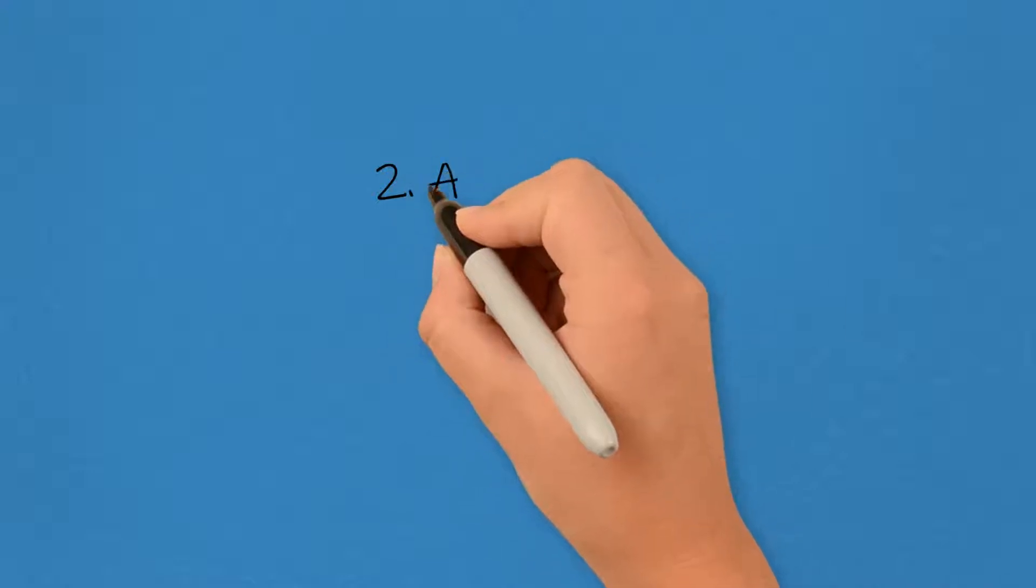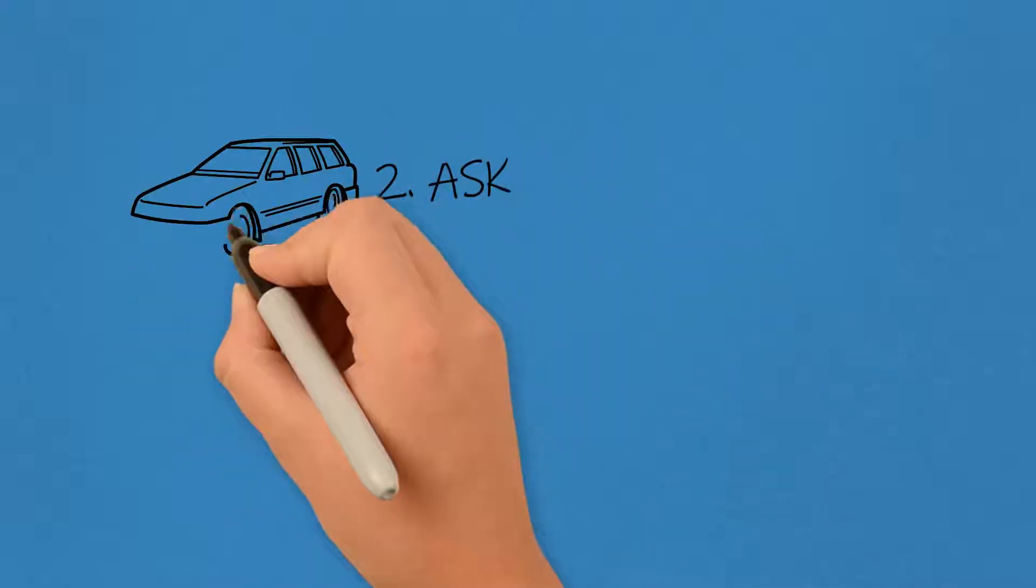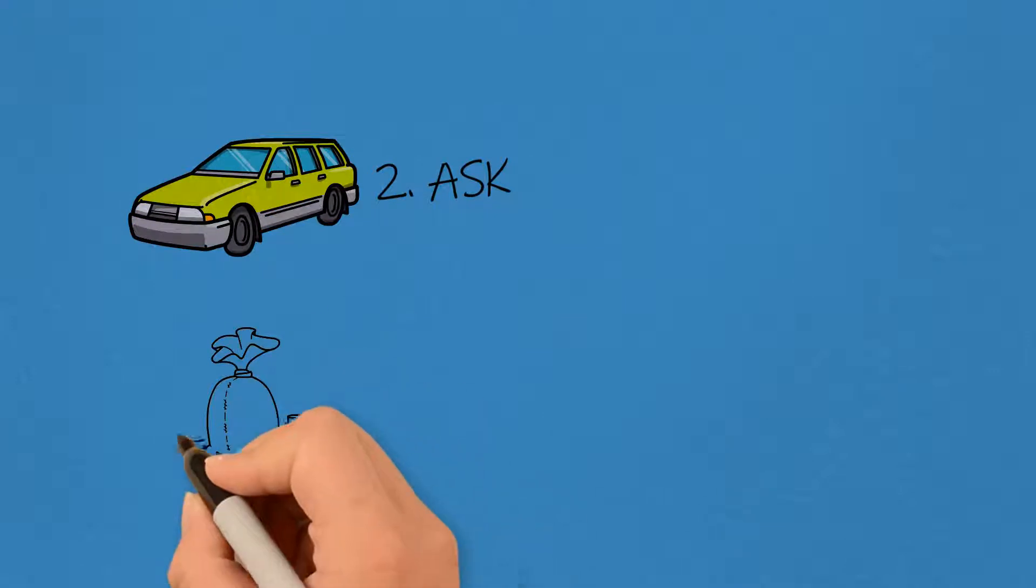Two, ask. Ask the dealership for information about the average cost of upkeep. This information is critical as you examine the overall cost of the purchase.